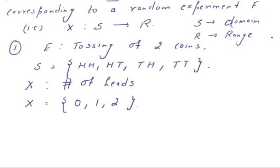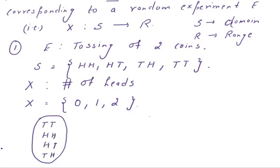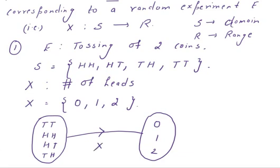A random variable maps the set of all possible outcomes — such as TT, HH, HT, TH — to the set of real numbers, here {0, 1, 2, ...}. For this experiment, the outcome tail-tail has no heads, so it maps to the real number 0, meaning X(TT) = 0.